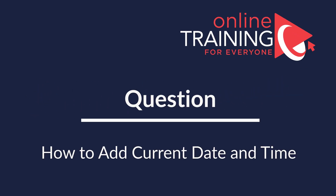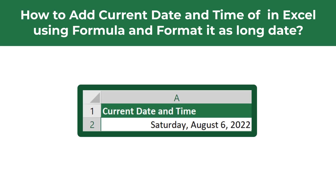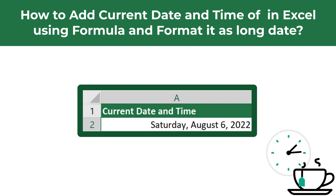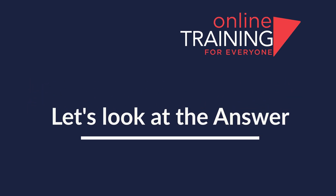Here's an interesting Microsoft Excel test question which tests your knowledge of Excel formulas. You need to show how to add the current date and time in Microsoft Excel using a formula and then format it as Long Date. Do you know how to do it? Give yourself 5 to 10 seconds to see if you can come up with the formula. I am going to move forward and show you the solution — in fact, the solution is very simple.